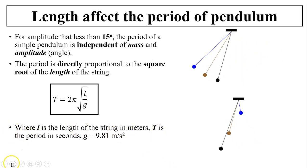So L is the length of the string, T is in seconds, and g is 9.81 meters per second squared. So that means T does depend on g because if we're talking about on Earth, T only depends on the length. If we take this pendulum on the moon, then obviously the period is going to be affected by the value of g because g is different.